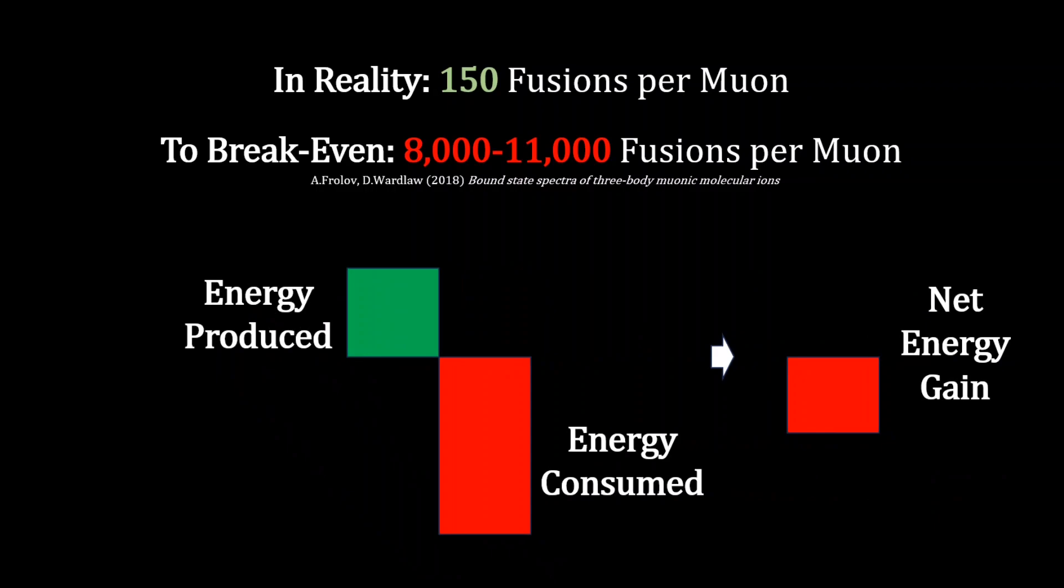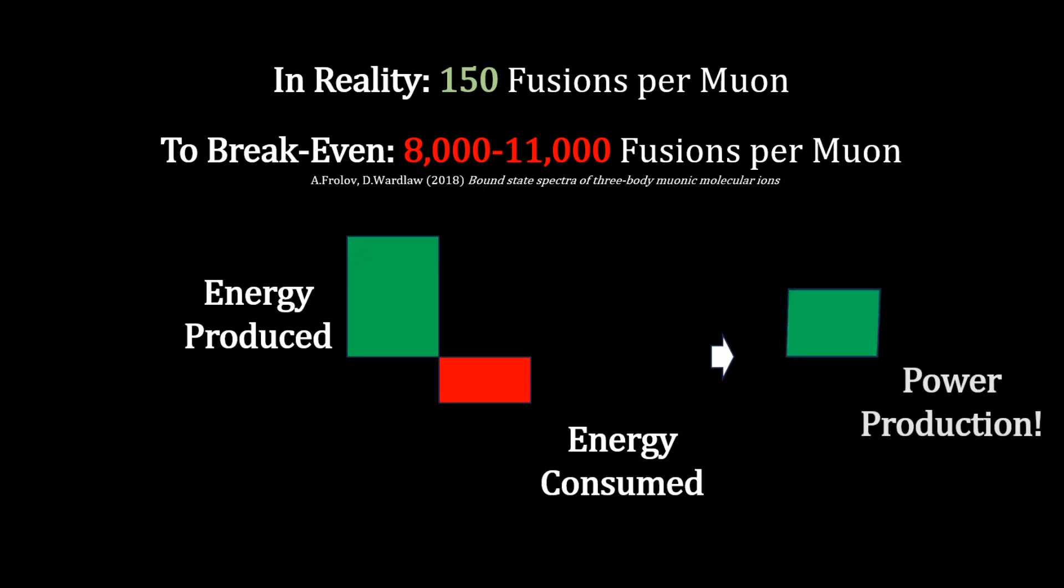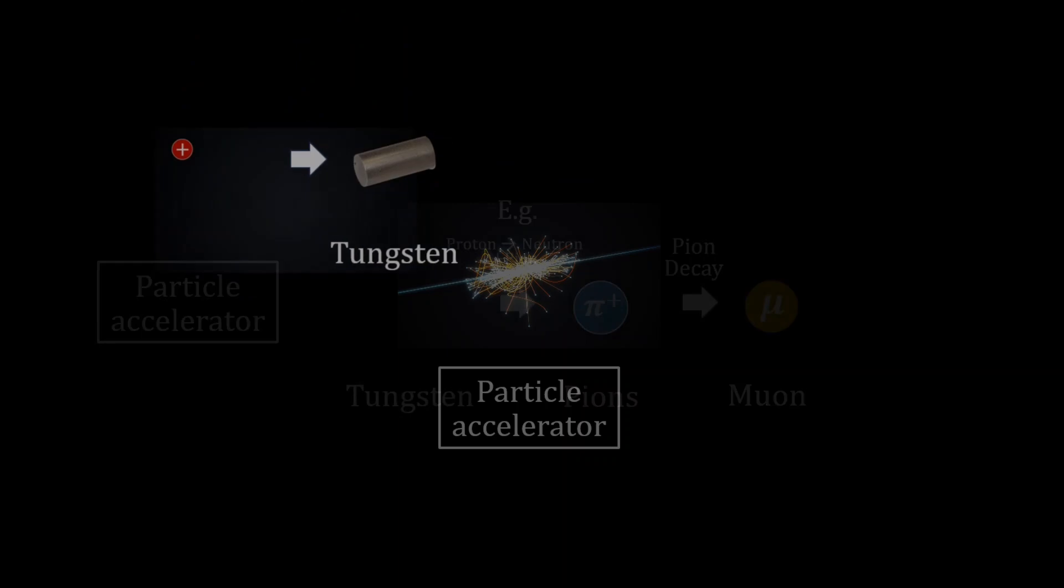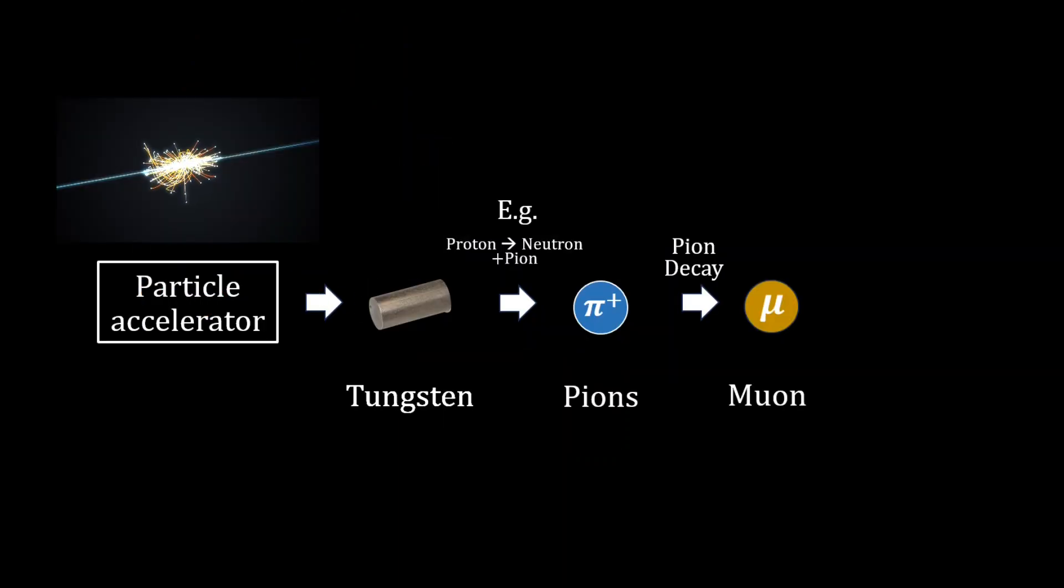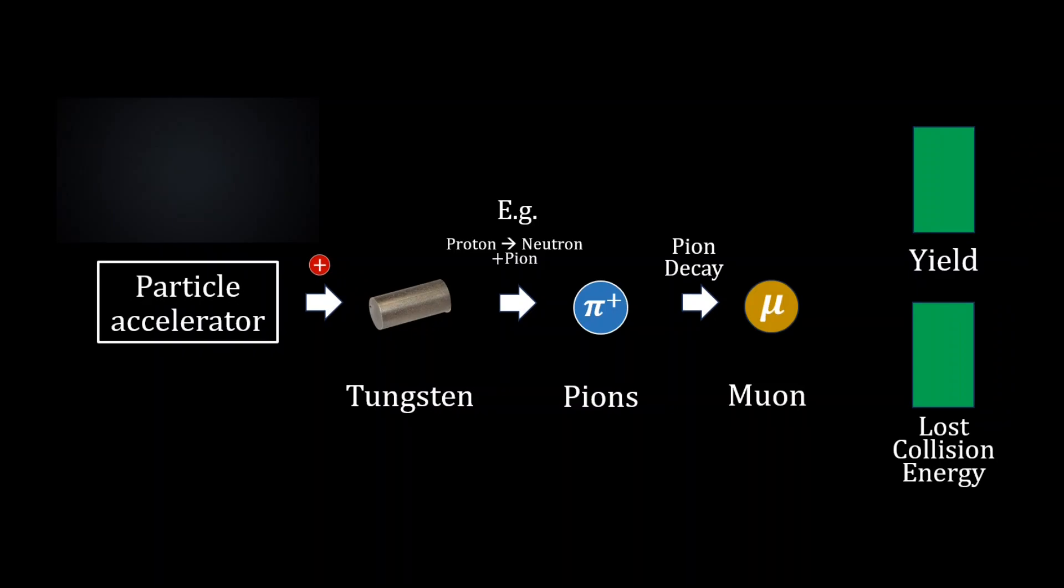This is the other technical issue. Producing and maintaining enough muons in the fusion chamber for effective catalysis is energy intensive. Muons are typically made via high energy particle accelerators, making mesons, like pions and kaons, which decay into muons, albeit with potentially low yield and high energy inefficiency from numerous inelastic collisions.